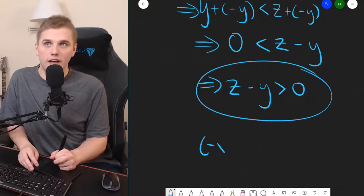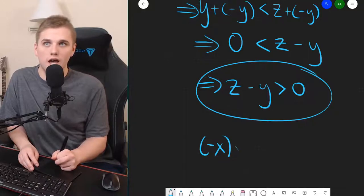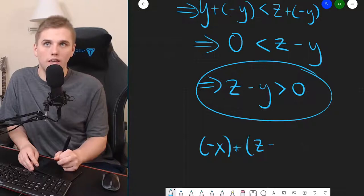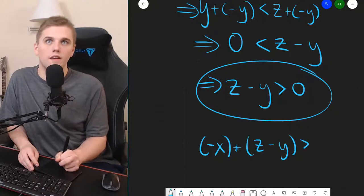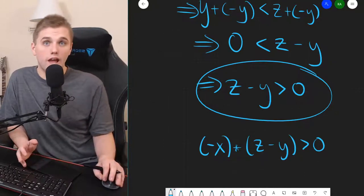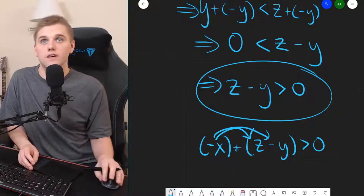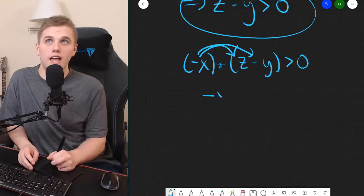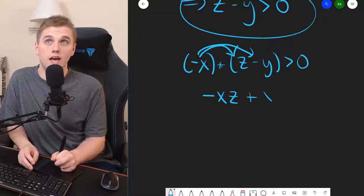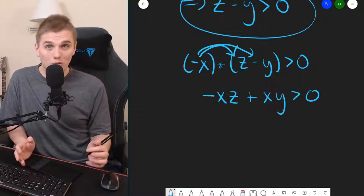So, this means that negative x times z minus y is greater than zero. Now, using the distributive property, we can distribute negative x to get negative xz plus xy is greater than zero. We're almost done here.